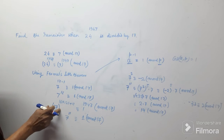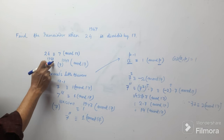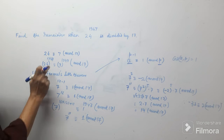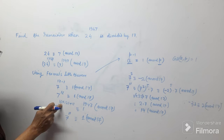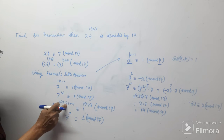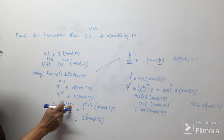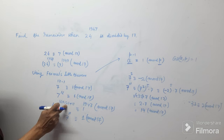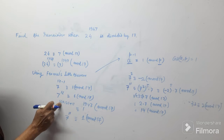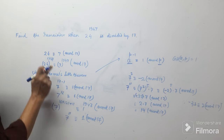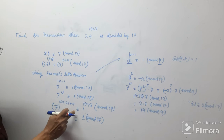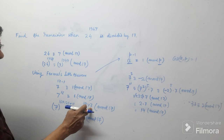Now raise the power of 7 up to 1947. For this, we divide 1947 by 16, and we get: 16 into 121 plus 11. So 11 is the remainder and 121 is the quotient, and 16 is the divisor. So 1947 = 16 × 121 + 11.